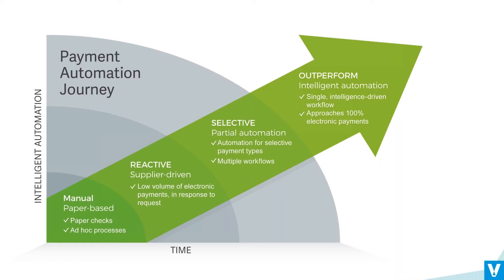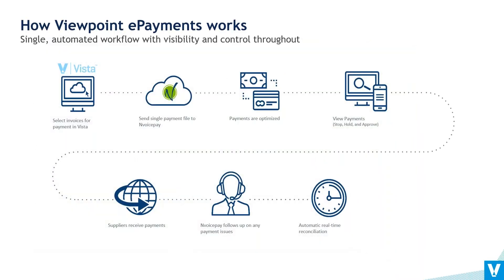They have to have one process for paying suppliers by check, another for ACH, and yet another for virtual credit card. We help companies get to where they would really like to be: a single workflow using the optimal payment type for each supplier, without having to collect and update supplier payment information themselves.